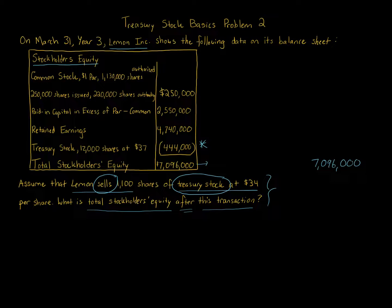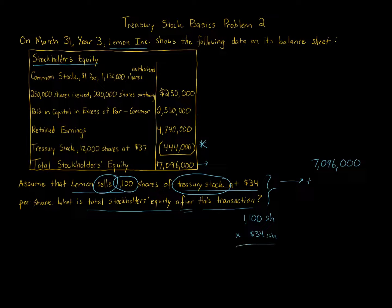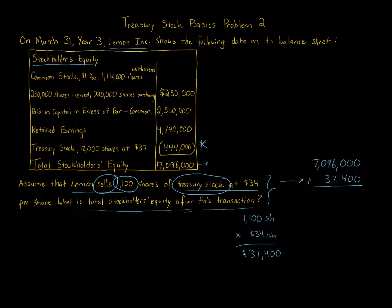We're going to add to the $7,096,000 the proceeds from selling 1,100 shares at $34 per share, which gives us a total of $37,400. We increase our stockholders equity by $37,400 because that treasury stock account is being reduced — those shares are no longer treasury stock; they're going back out to various stockholders. Adding these two numbers together, we get $7,133,400.